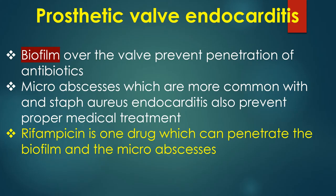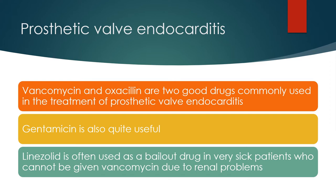Biofilm over the valve prevents penetration of antibiotics. Micro-abscesses, which are more common with Staph aureus endocarditis, also prevent proper medical treatment. Rifampicin is one drug which can penetrate the biofilm and micro-abscesses. Vancomycin and oxacillin are two good drugs commonly used in the treatment of prosthetic valve endocarditis.